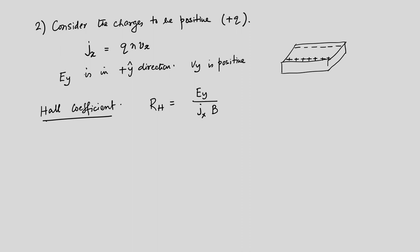Before talking further about the Hall effect, let us discuss the magneto-resistance — the resistance the system develops due to the presence of a magnetic field. This is also called the longitudinal resistance. It is defined as E_x versus J_x, i.e., the electric field along x divided by the current flowing in the sample. This is actually not a function of B.